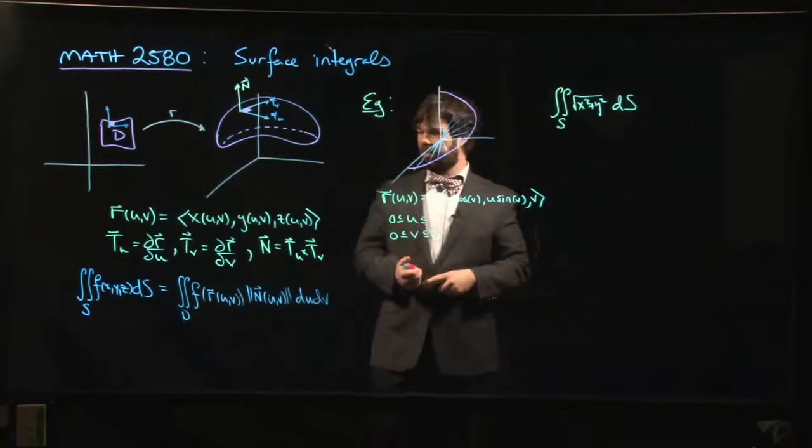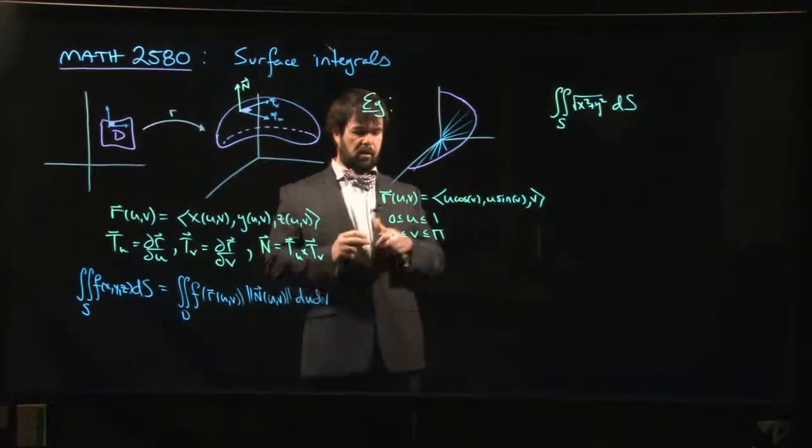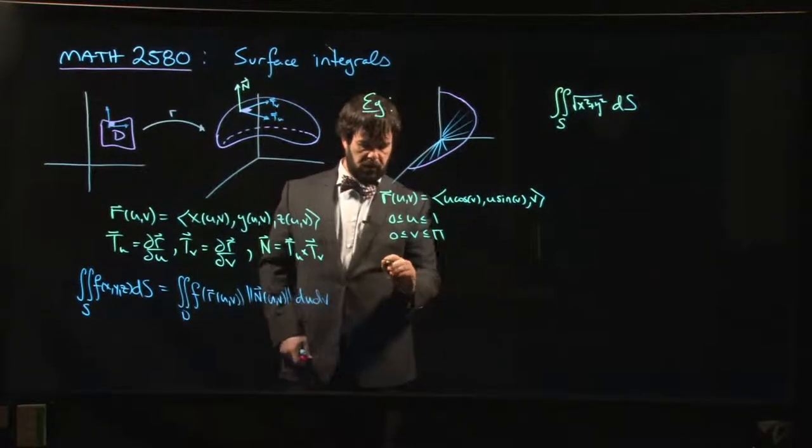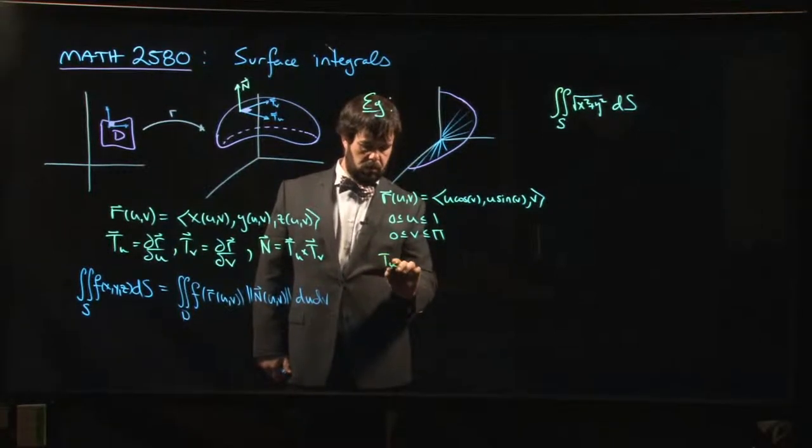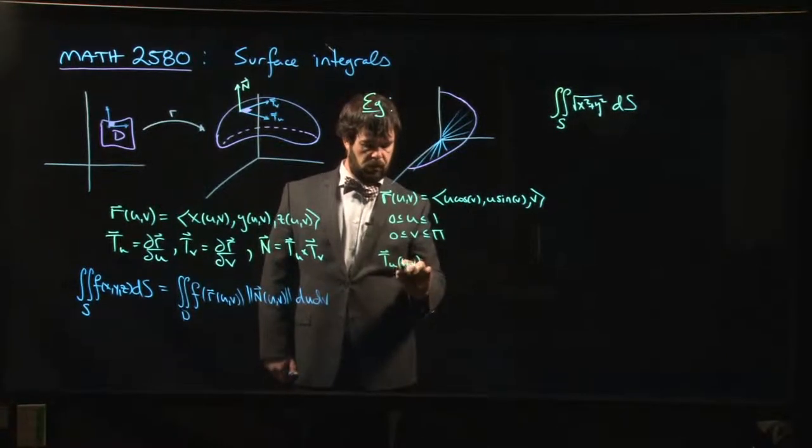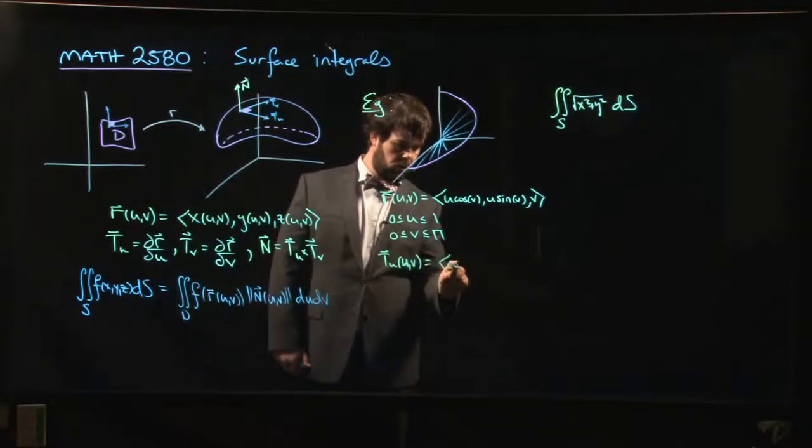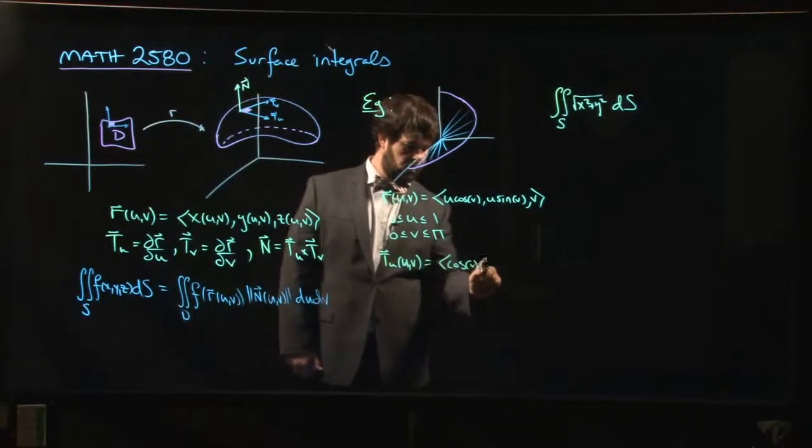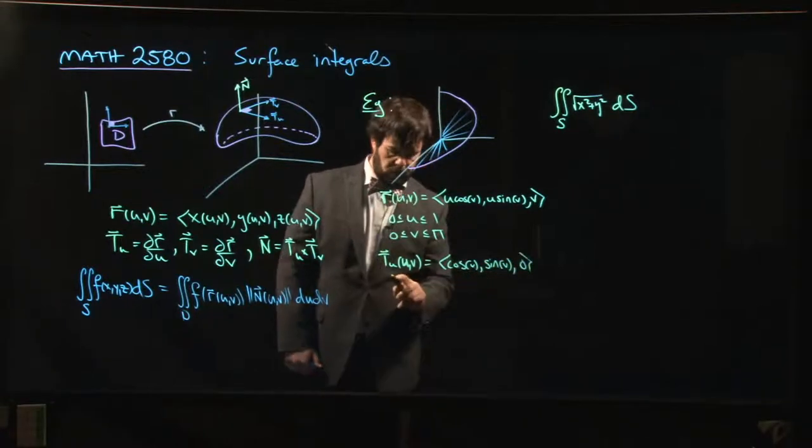If we want to evaluate this integral, we need the normal vector. So we know that the way we get the normal vector is we calculate the two tangent vectors. So T sub u of u and v is going to be cos v, sin v, 0.